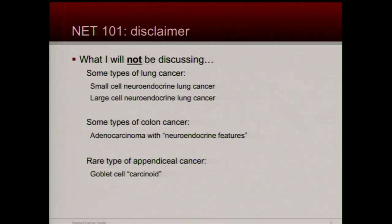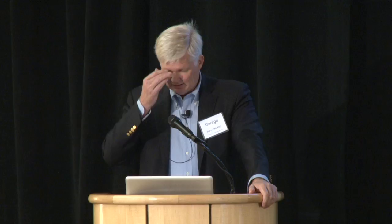First of all, a disclaimer: in events PAM and I have put together before, there is almost always one or more people who are here with the wrong diagnosis. If you happen to be here with a small cell neuroendocrine tumor from the lung, or a large cell neuroendocrine tumor of the lung, or an adenocarcinoma with neuroendocrine features, or something called a goblet cell carcinoid — those tumors, although they have neuroendocrine or carcinoid in the name, are not actually the neuroendocrine tumors we're going to be talking about today. I don't want you to feel left out in the cold if you happen to have one of those diagnoses.